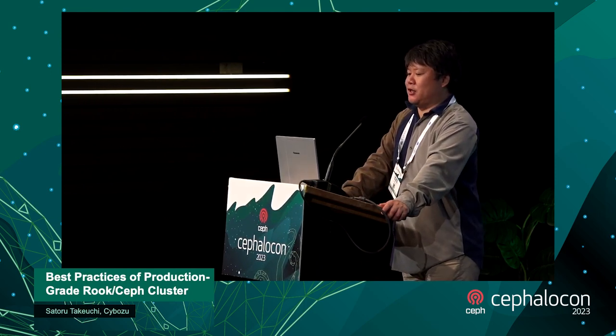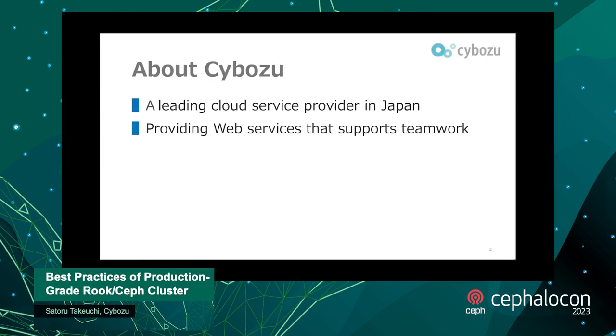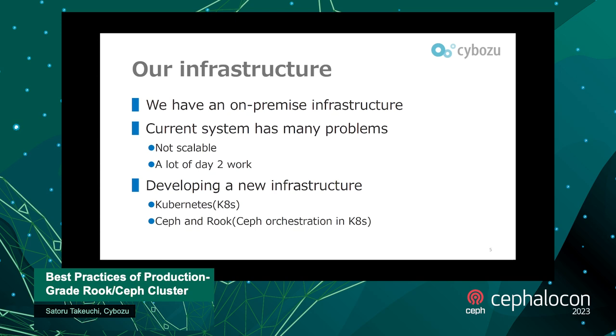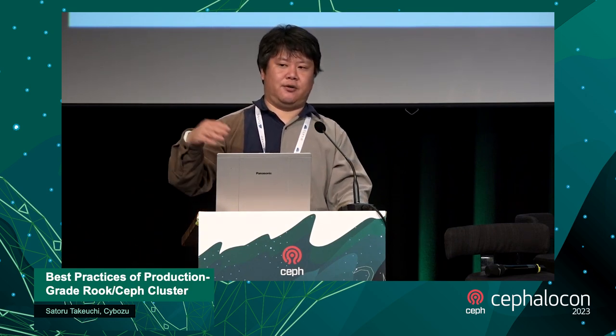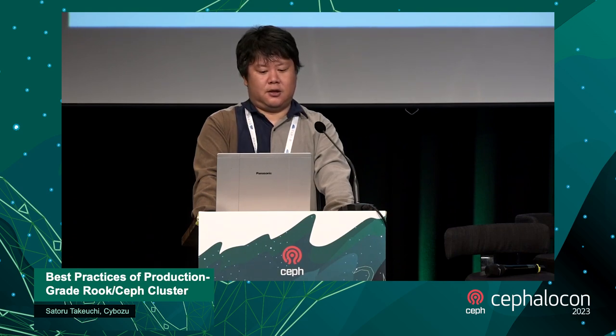So, Cybozu and our system. Cybozu is a leading cloud and service provider in Japan, providing web services that support teamwork in companies. We have an on-premise infrastructure, not in the cloud environment. The current system has many problems — especially it's not scalable, and a lot of work is needed when a machine breaks. So now we're developing a new infrastructure on top of Kubernetes, with Ceph and Rook as the storage system. Rook is probably the Ceph orchestration in Kubernetes.